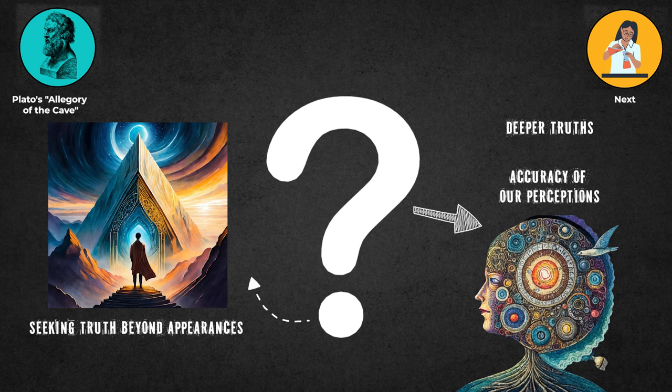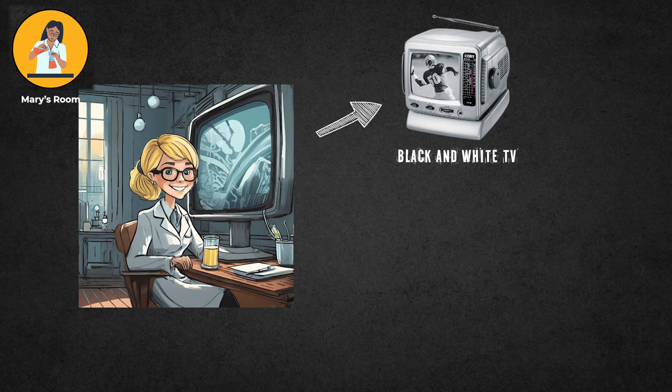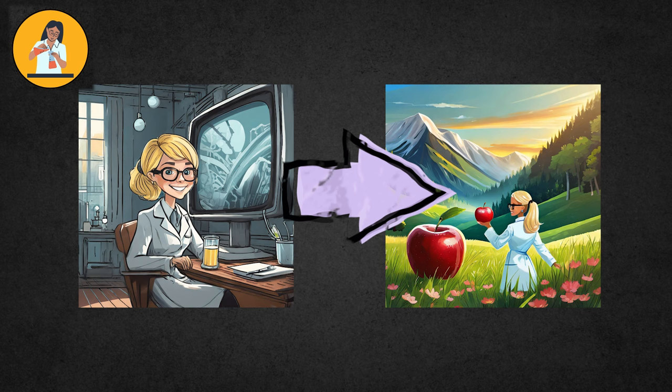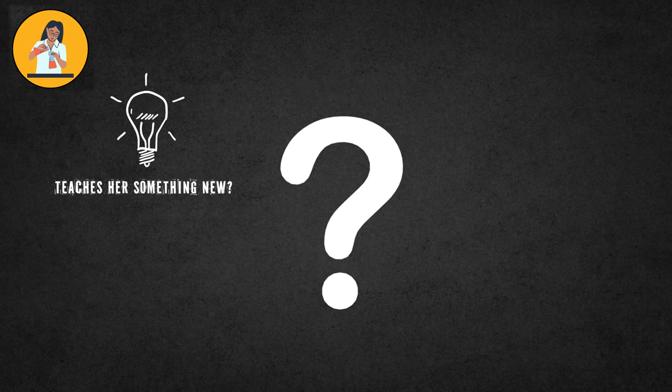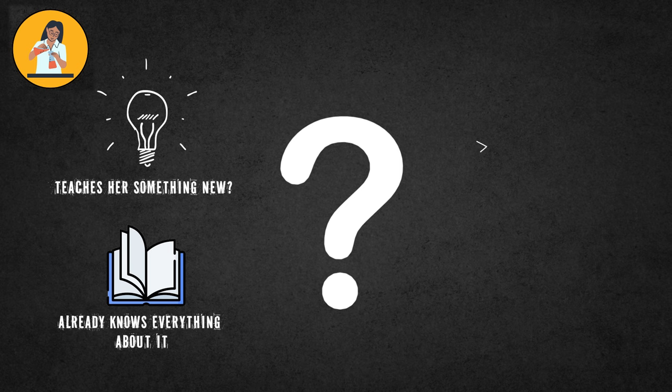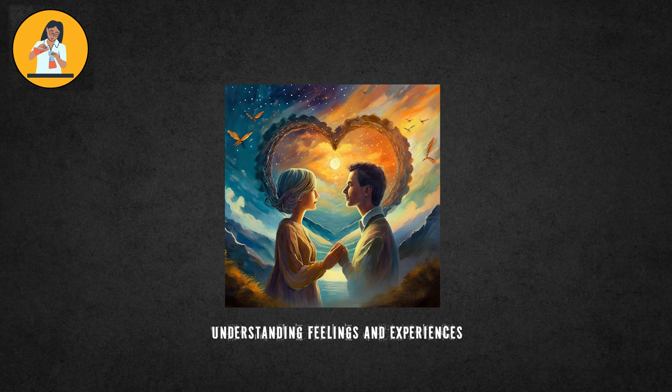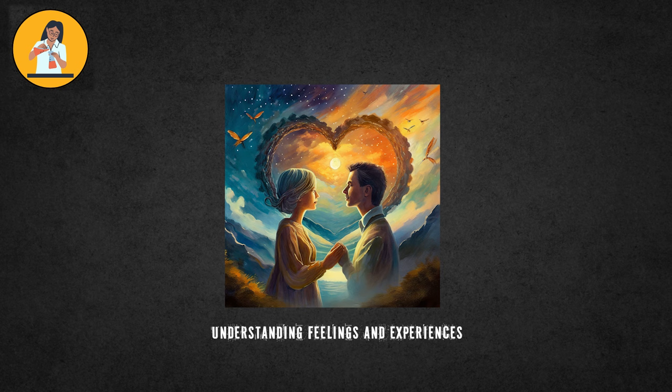Mary's Room: Mary is a scientist and has lived her whole life in a room with only a black and white TV. She learned everything about the science of color but has never seen color herself. Once Mary is allowed out of the room, she sees a red apple for the first time. The question is whether this experience teaches her something new about seeing the color red, or if she already knows everything about it. This experiment asks if actually experiencing something teaches us more than just knowing about it scientifically. It suggests that understanding feelings and experiences goes beyond just knowing how our bodies work, showing that science has limits in explaining how we think and feel.